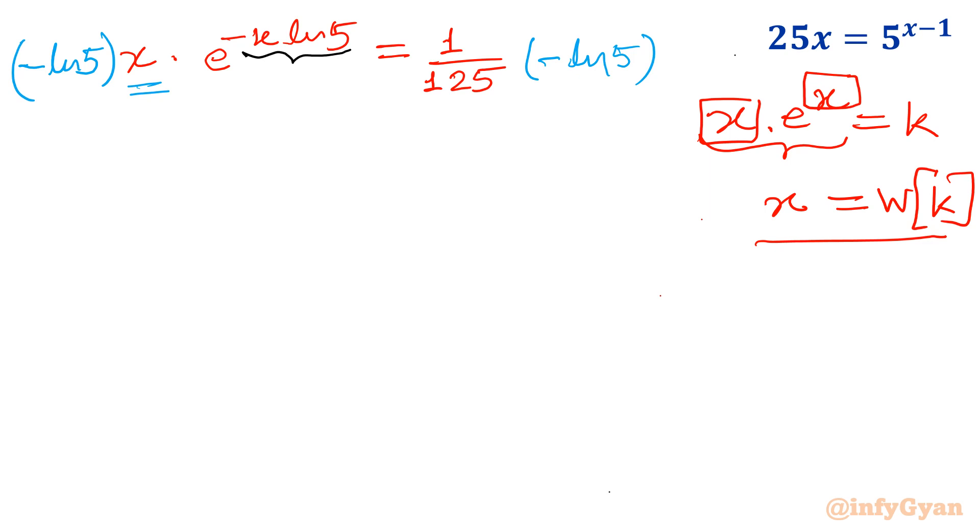Now we can check how our equation will form. Let me write equation will be minus x ln 5 times e raised to the power minus x ln 5 equal to 1 over 125. Now we can easily see our exponent and this term is same. Now it is matching with Lambert W. So what I will do? I will write left hand side as minus x ln 5. That would be equal to Lambert W of 1 over 125.